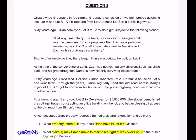Let's take a look at the facts. Olivia owned Greenacre in fee simple. Greenacre consisted of two unimproved adjoining lots, Lot A and Lot B. A dirt road led from Lot A across Lot B to a public highway — and that is the road that's the subject of call two. Sixty years ago, Olivia conveyed Lot B to Barry as a gift, subject to the following clause.